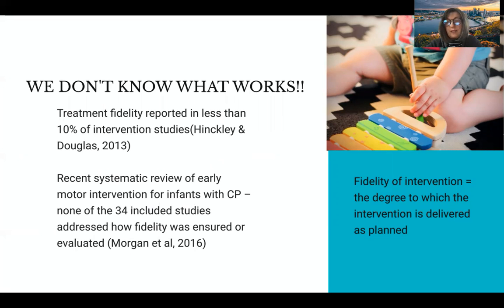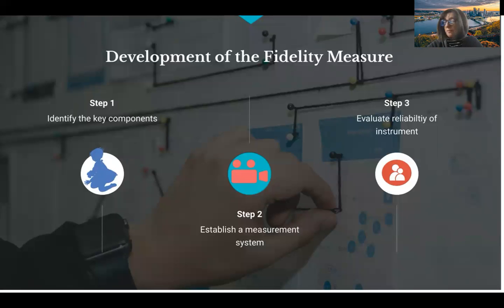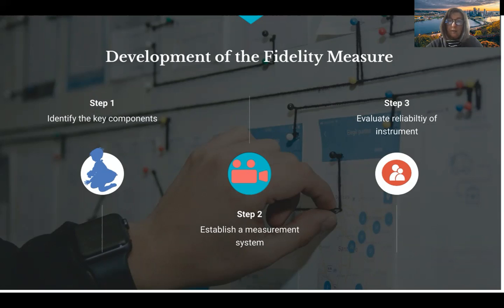Fidelity is defined as the degree to which the intervention is delivered as planned. To develop the fidelity measure, first you have to identify the key components, and that's usually done by understanding the theory of change that you're addressing with your intervention. Once you identify the things you believe are key to your intervention, you must establish a measurement system. In our case, we videotaped intervention sessions and then coded them minute by minute.